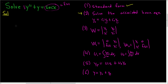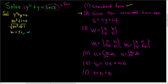Step 2: solve the associated homogeneous equation y double prime plus y equals 0. Write the auxiliary (characteristic) equation: m squared plus 1 equals 0. Solving gives m squared equals negative 1, so m equals plus or minus i. These are complex conjugate solutions of the form alpha plus or minus beta·i, where alpha equals 0 and beta equals 1.